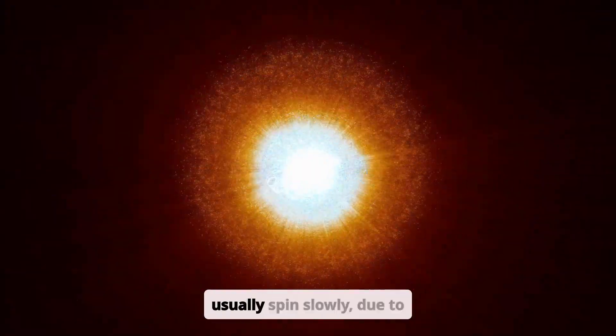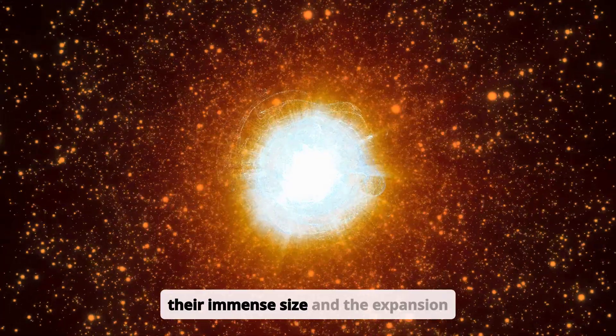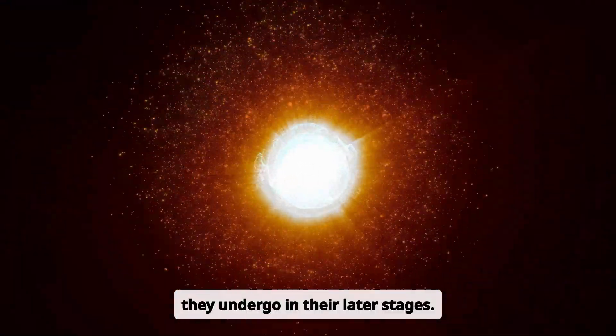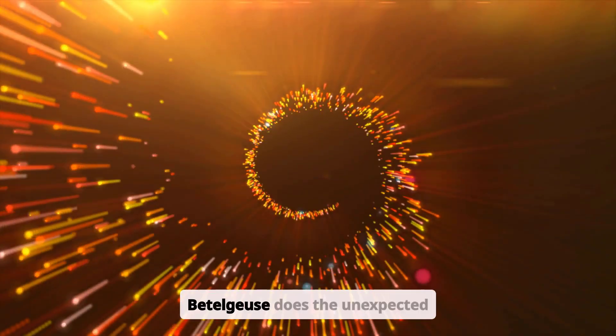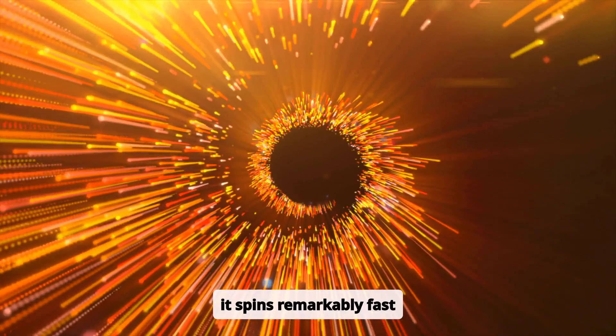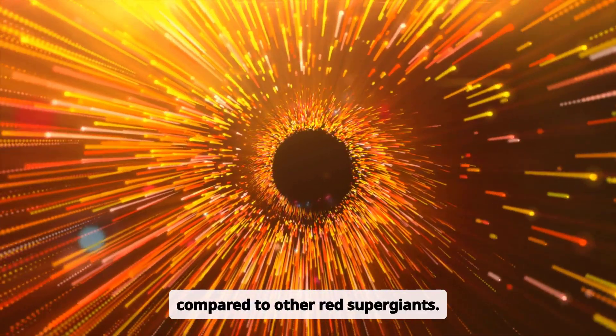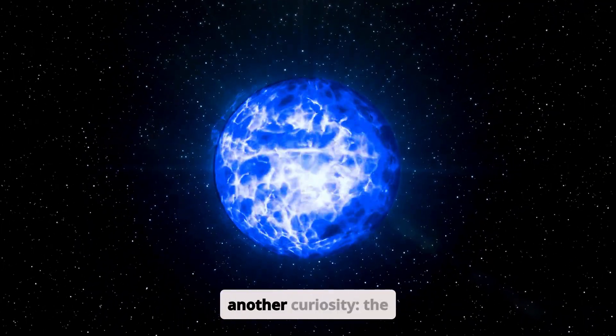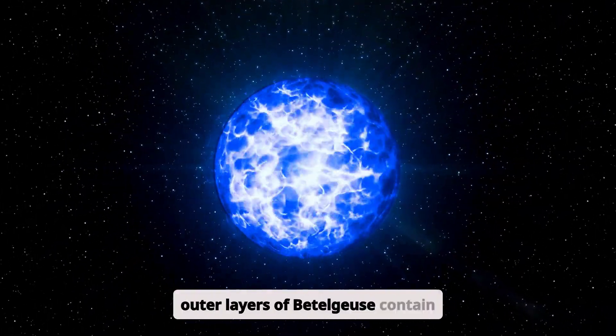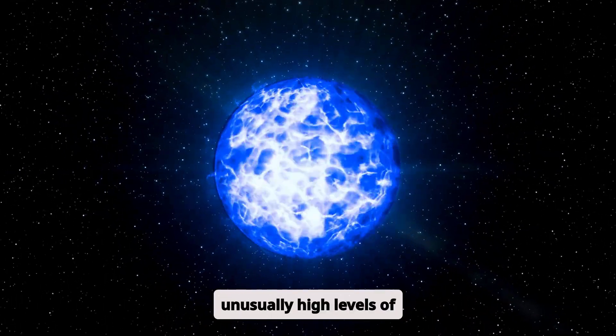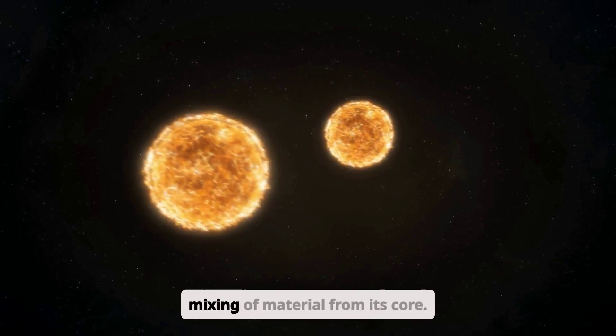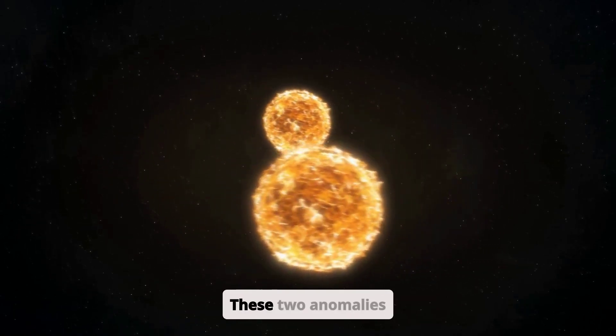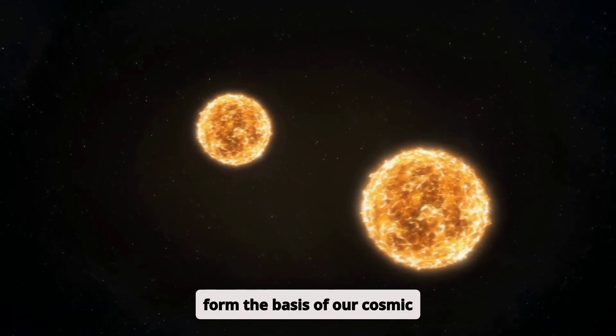Stars like Betelgeuse usually spin slowly, due to their immense size and the expansion they undergo in their later stages. However, Betelgeuse does the unexpected: it spins remarkably fast compared to other red supergiants. Coupled with this is another curiosity: the outer layers of Betelgeuse contain unusually high levels of nitrogen, indicating extensive mixing of material from its core. These two anomalies form the basis of our cosmic mystery.